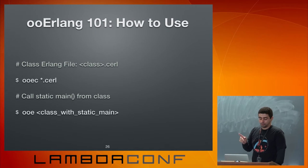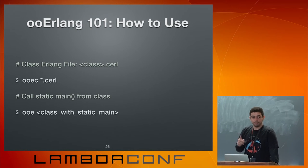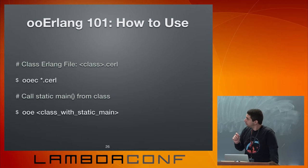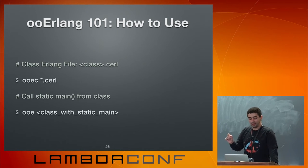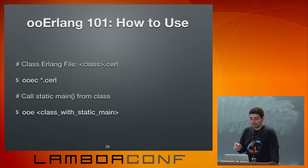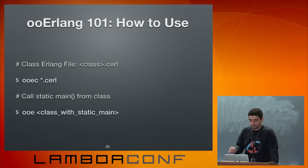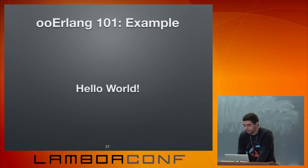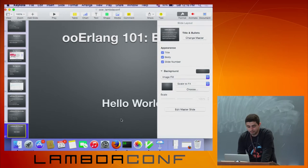There are two tools we use to compile and execute OOErlang code. The first is our compiler, OOEC, which receives one or more source files with our extension .cerl — which stands for class Erlang. Just like in Java, if you declare a static main function, you can easily run your program using the OOE run command line. I'll show a basic hello world so you can get a feeling for the language.